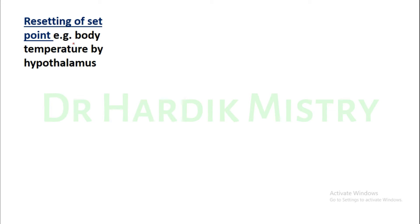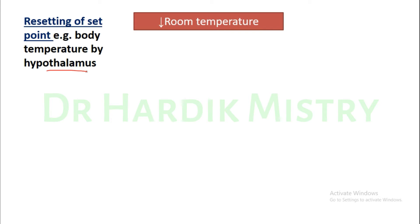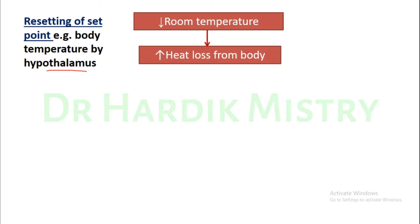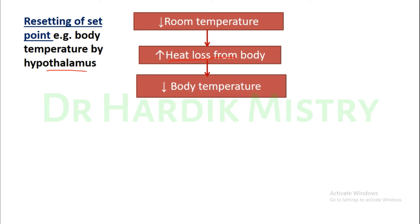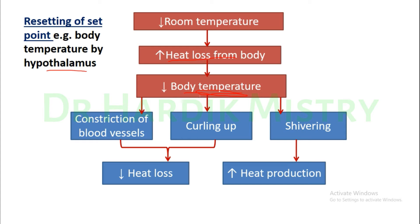Resetting of set point: body temperature regulation by the hypothalamus. In India there are three seasons — winter, summer, and monsoon — and our body regulates temperature by resetting the set point. Taking winter as an example: a decrease in room temperature causes increased heat loss from the body, which decreases body temperature. Different mechanisms then work to gain heat through heat production or decreased heat loss simultaneously.